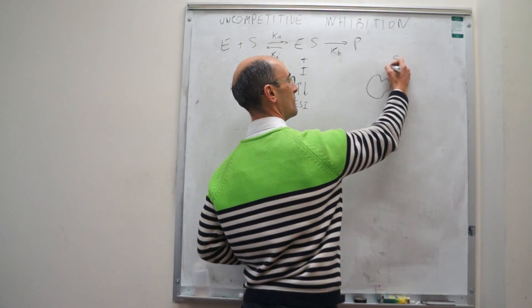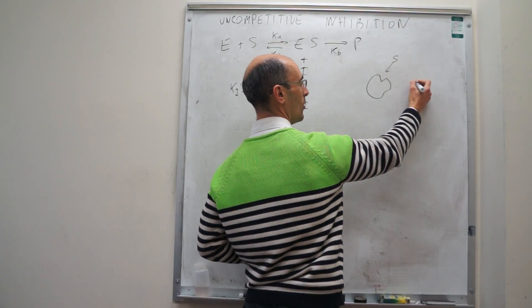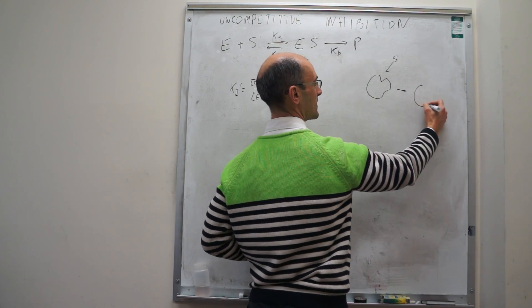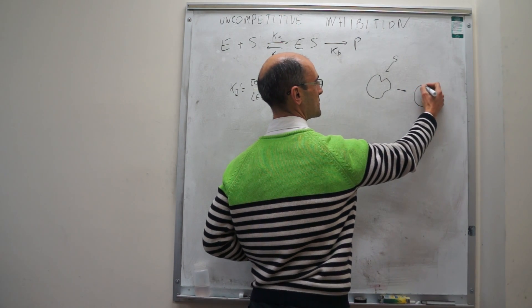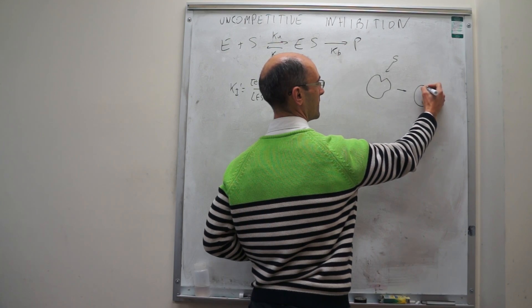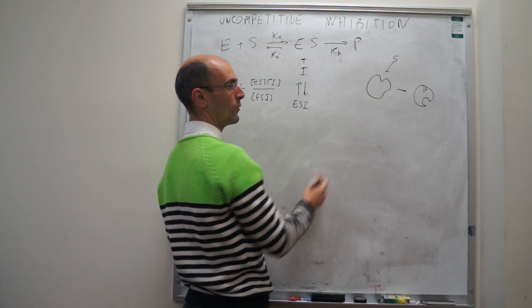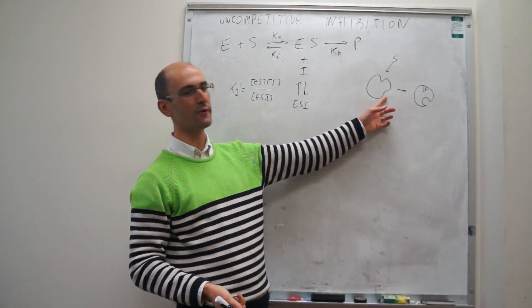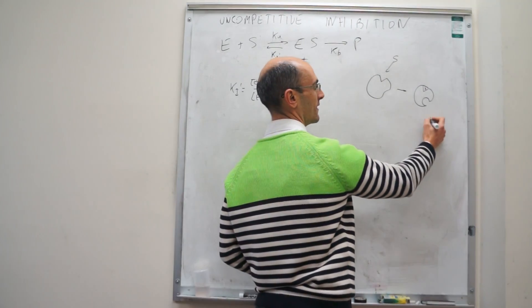So the substrate can bind to that active site, and only after it has bound, so only after you actually have the substrate bound right there, then the other site, which was in kind of a proto form, can form, and then the inhibitor can bind in.